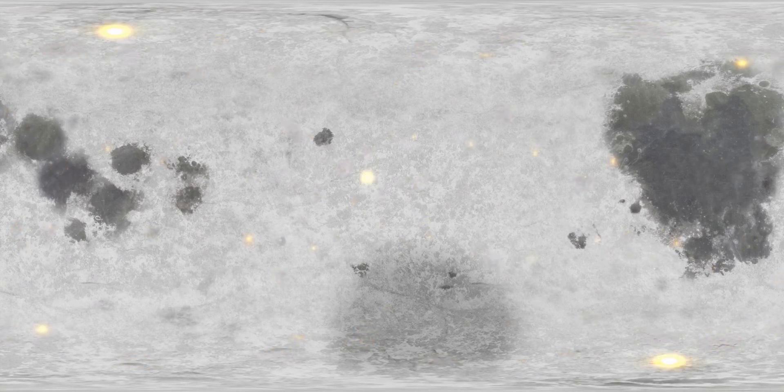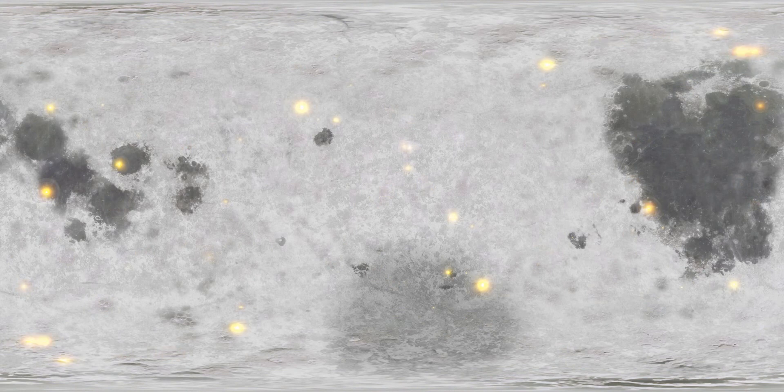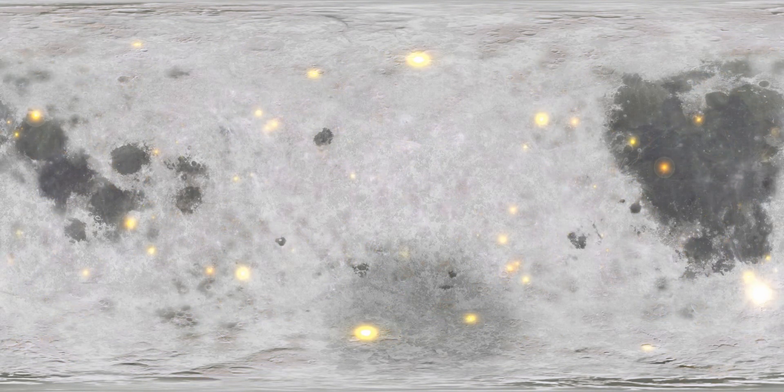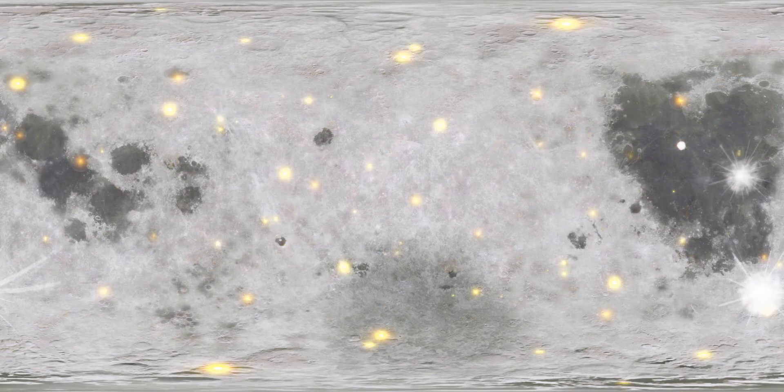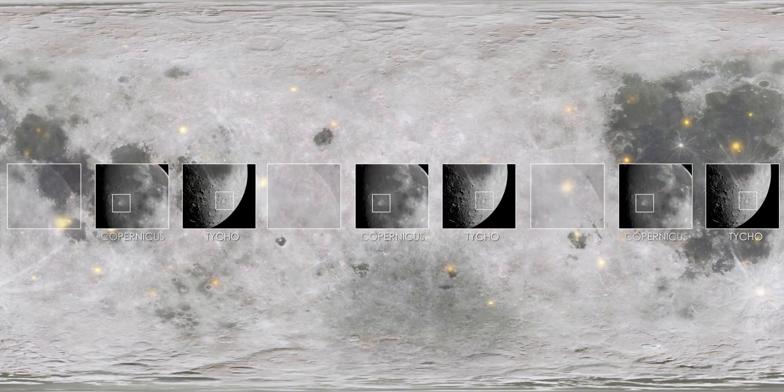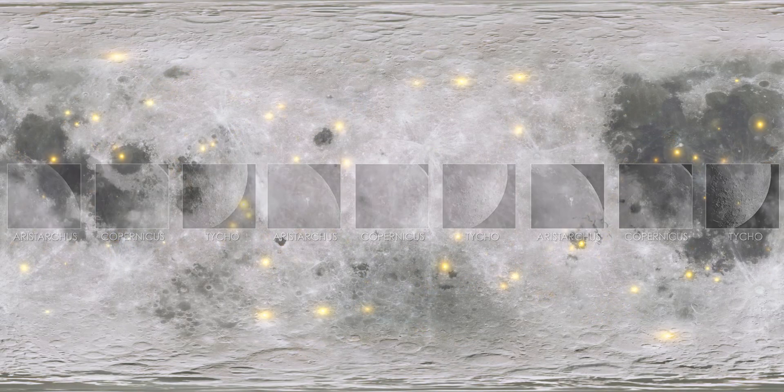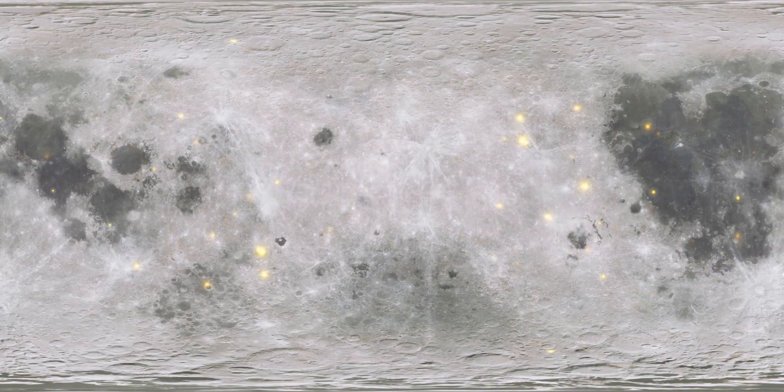The Moon continued to be battered by other impactors, although they were much smaller than the objects that formed the largest basins. Some of the largest, most recent and best known impacts from this period include the Tycho, Copernicus and Aristarchus craters, which are unique due to the complex system of rays that stretch out from the impact site.